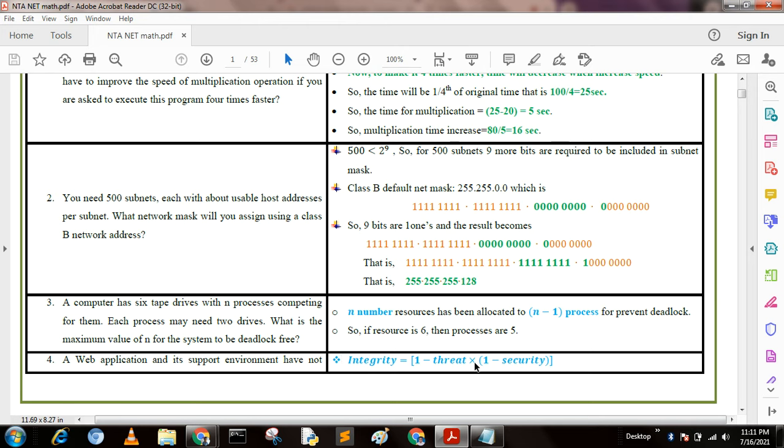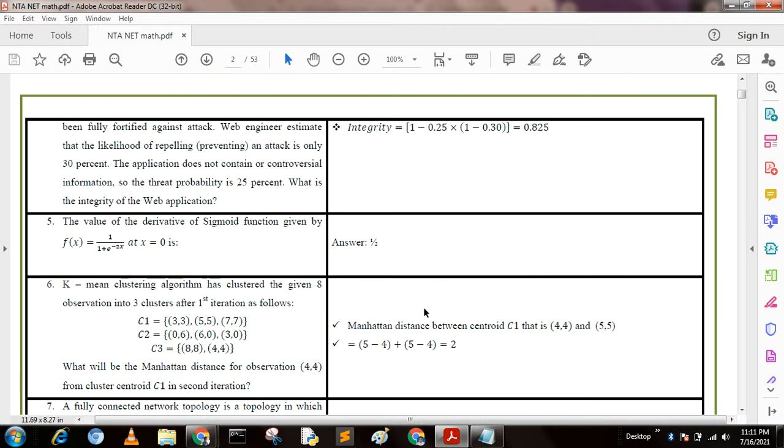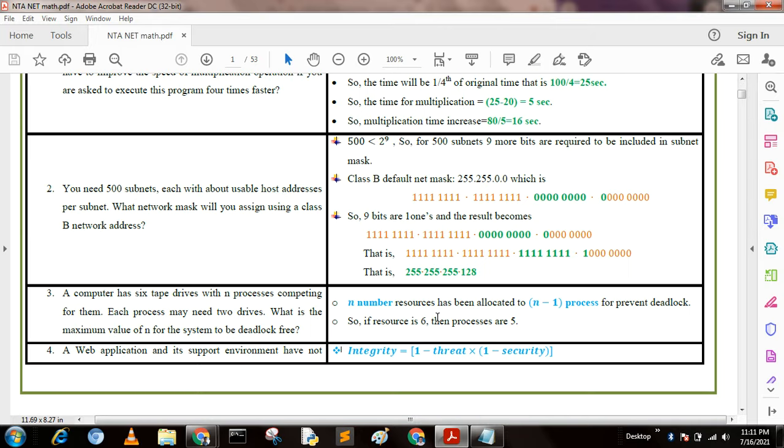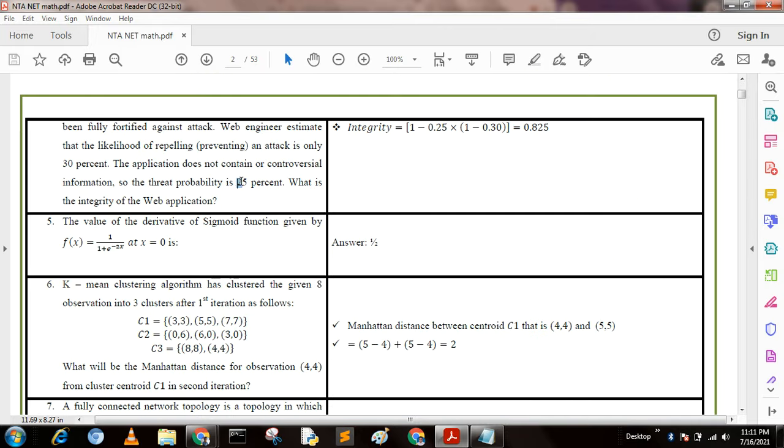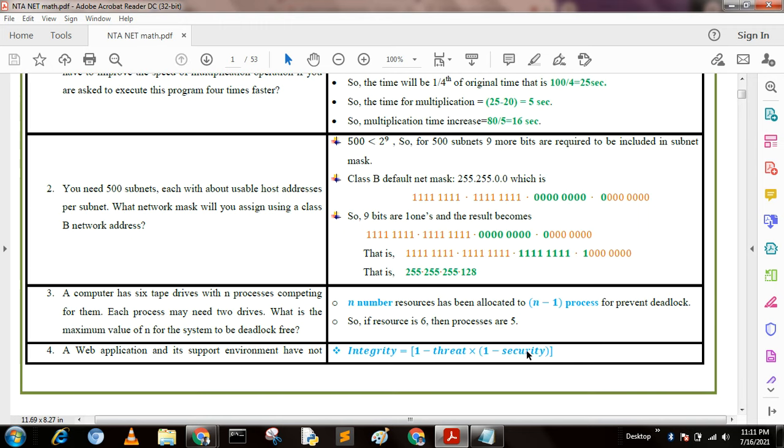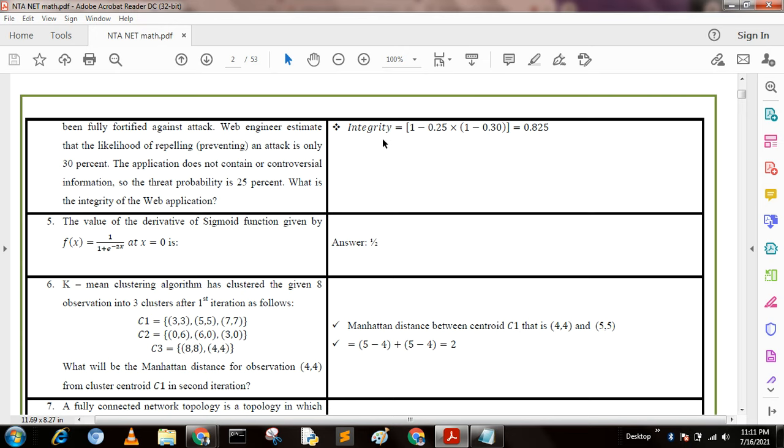Threat is defined as 0.25 percent and 0.30 is defined as security. We put this value and get the answer 0.825, which is the integrity.